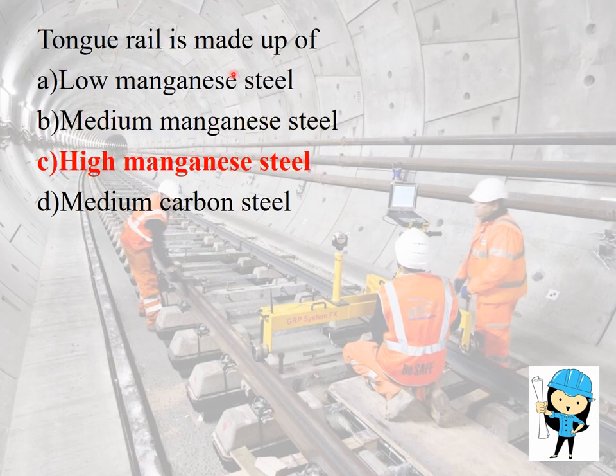Tongue rail is made up of high carbon manganized steel. It is thicker and is attached to a running rail. The tongue rail is also known as the switch rail.